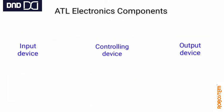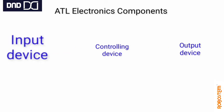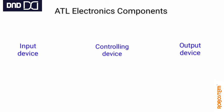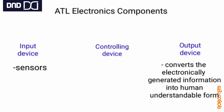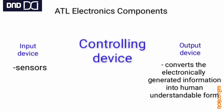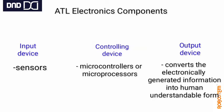In the ATL components, the input and output devices are available. Input devices are mostly sensors. Input devices and components are available. Output devices include laser diode, LEDs, motors, displays, submersible water pumps, and DC motors. These are some examples of output devices available at the ATL level.